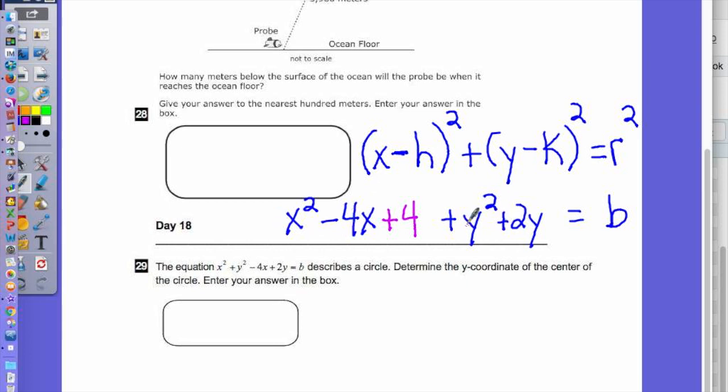So same thing over here. Notice that this y squared has no leading coefficient. Half of 2 is 1, and 1 squared is 1. Now I'm adding 4 here and I'm adding 1 here, correct? So I'm adding how much? 5. I have to add 5 over here.